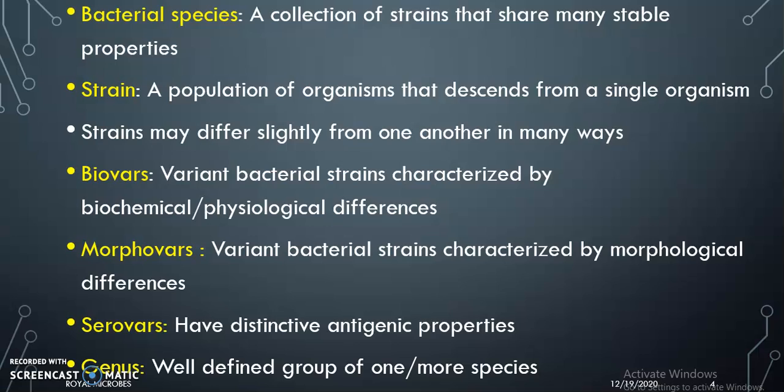What is a bacterial species? It is a collection of strains that share many stable properties. A strain is a population of organisms that descend from a single organism, but they differ slightly from one another in many ways. For example, biovars are bacterial strains which are variable in some biochemical or physiological characteristics.